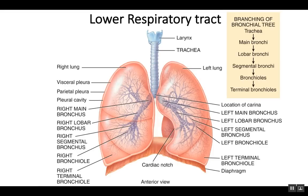At this position, T5, is where the trachea divides into the right and left primary bronchus. At this division, there's a region known as the carina. This is where we have a lot of sensory receptors that, when irritated, will cause you to cough.